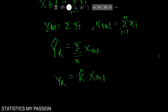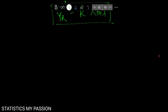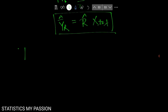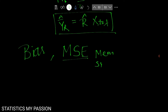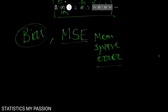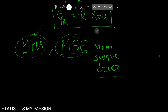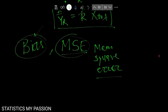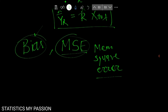Now the next term is how to find the bias and the mean square error, or MSE. In systematic sampling we find unbiasedness and the variance, but in this case we find the bias and the MSE because the ratio estimator is not an unbiased estimator of the population mean.